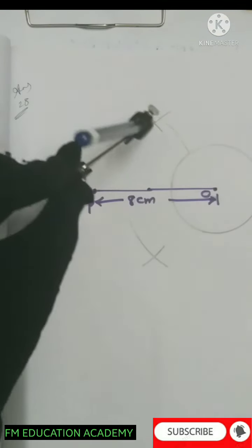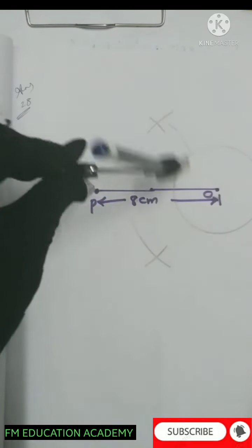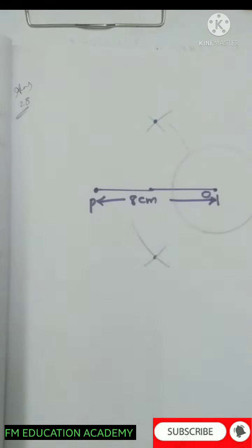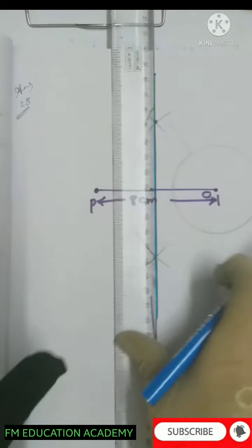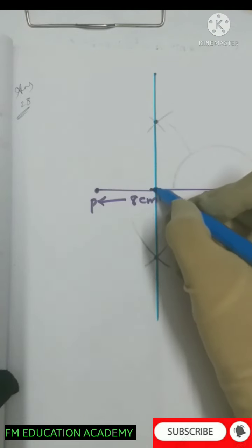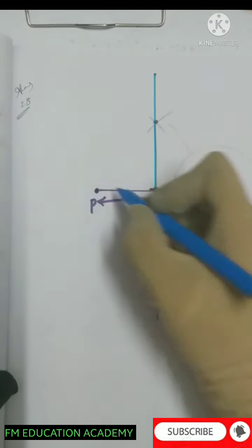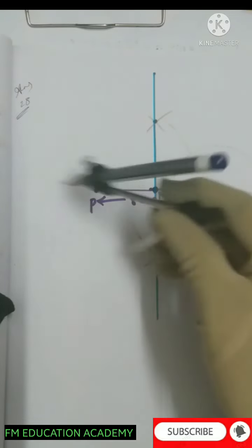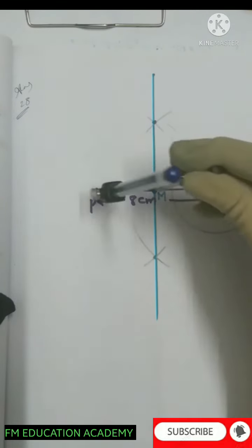When drawing the arcs, be careful that you touch at the correct point — don't let the compass slip as the radius might change. Mark these two intersection points and join them with the scale. Let this midpoint be M. Now, by placing the compass on M with radius MO or MP, draw a second circle. We already have one circle of radius 3 centimeters; now constructing this second circle centered at M.